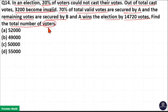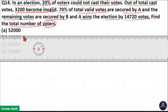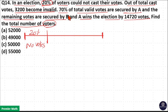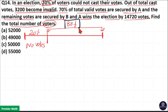Let us consider the total number of voters as 100%. Then, 20% of the voters could not cast their vote, meaning 20% did not vote. The remaining 80% cast their votes. Out of this 80%, 3200 become invalid.